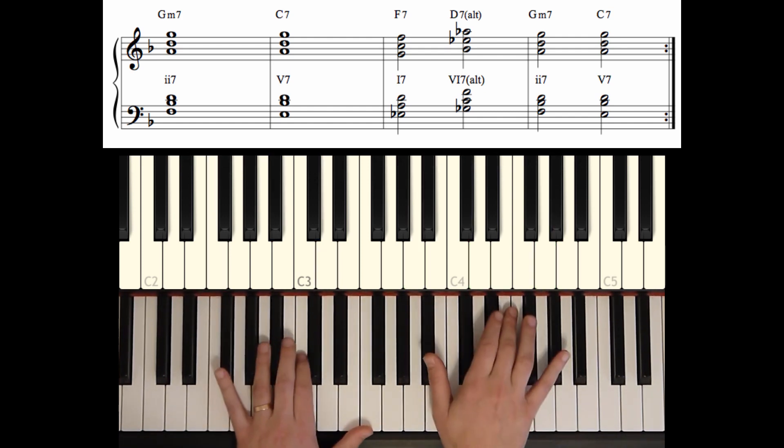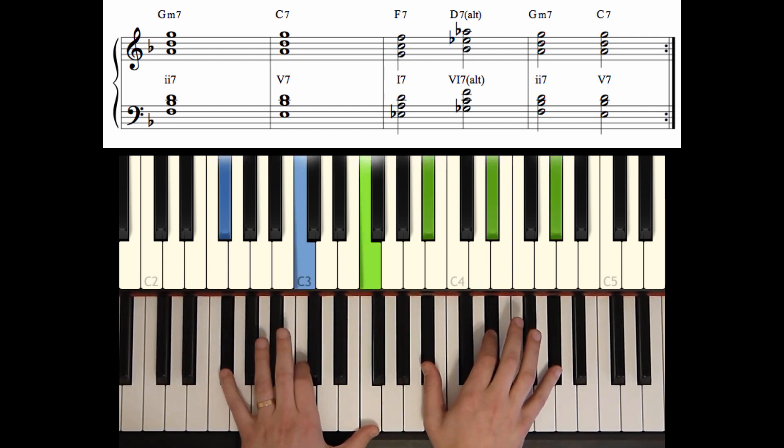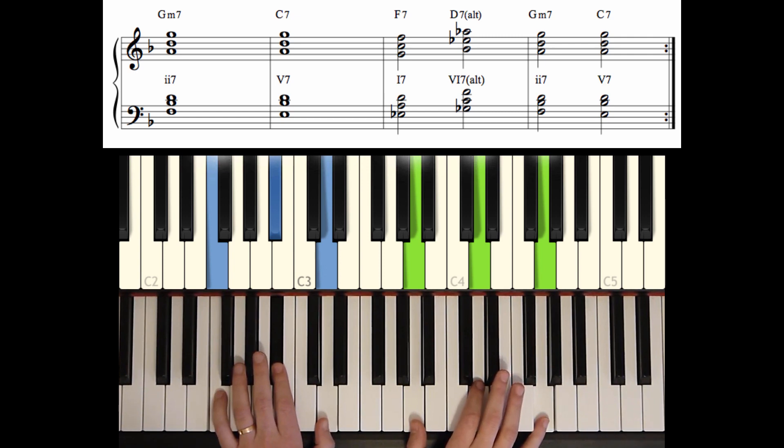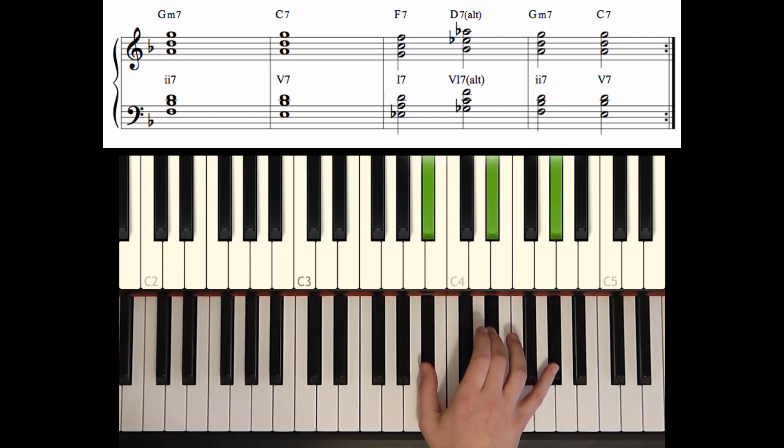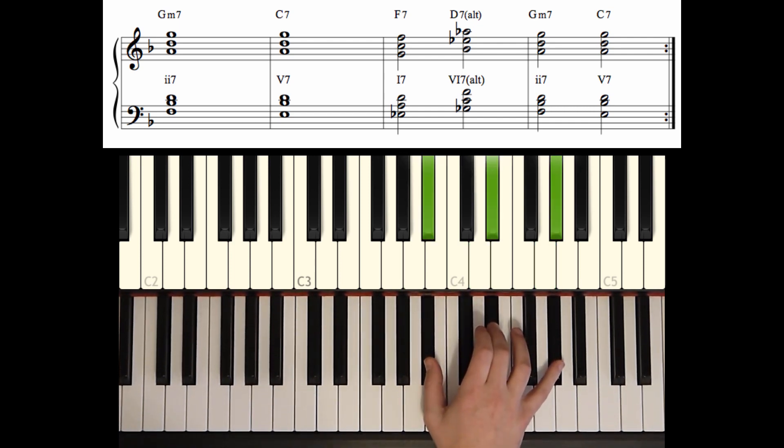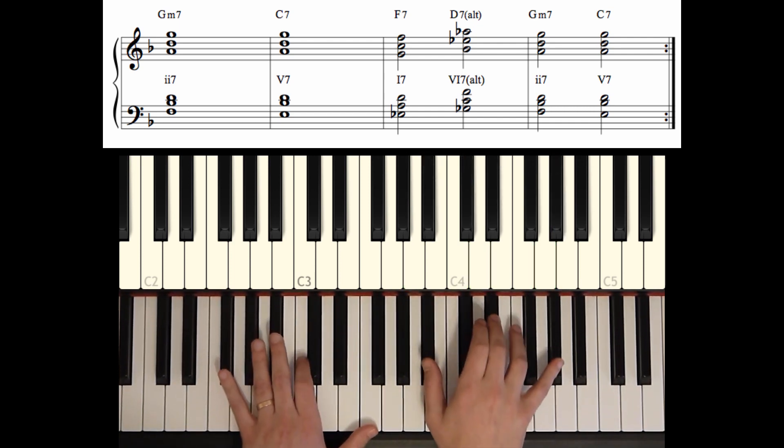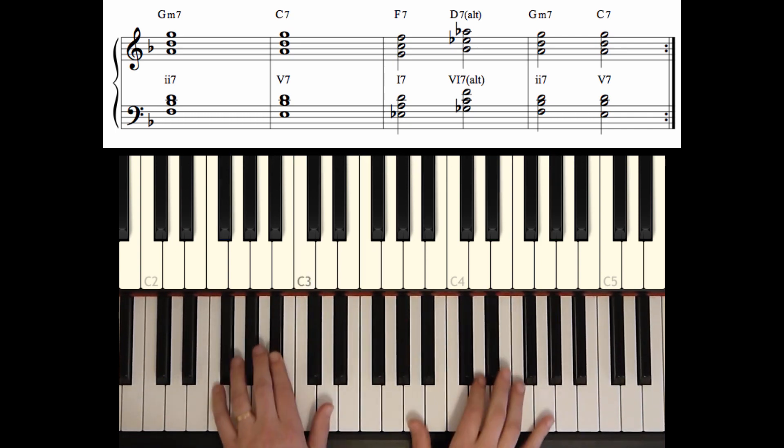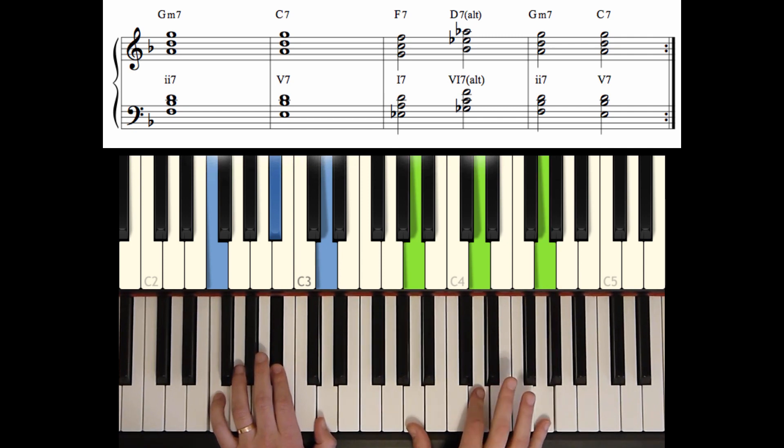So I want to go over the transition between our previous chord, D7 altered, to this one. I want to go over that in the right hand. Notice our right hand is just moving down by half steps. So here's D7. Check out the right hand. And then G minor 7. Just moving down a half step.